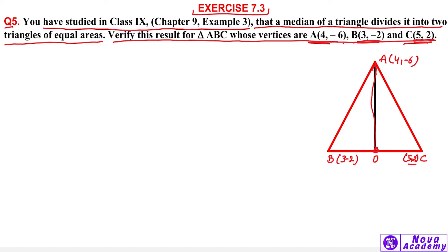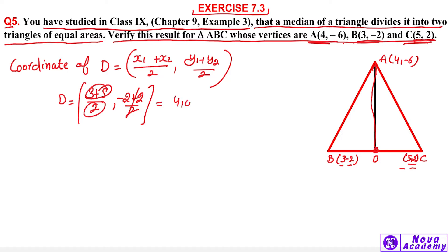The coordinate of D is (x1 + x2) divided by 2, (y1 + y2) divided by 2. We will put the coordinates and calculate. So here we will put (3 + 5) upon 2, (-2 + 2) upon 2. This will be 0. Here we will put 8 over 2, which is 4. So D point is (4, 0).